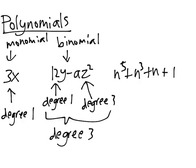Finally, let's look at n to the fifth plus n cubed plus n plus 1. This one is easy, since the degree of a monomial which only has a single variable in it is always going to be the power of that variable.